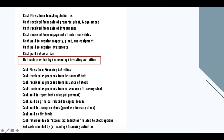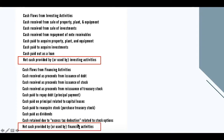For cash flows from financing activities, this would include cash received as proceeds from issuance of debt securities, cash received as proceeds from issuance of stocks, cash received as proceeds from reissuance of treasury stock, cash paid to repay debt principal, cash paid on principal related to capital leases, cash paid to reacquire stock or purchase treasury stock, cash paid as dividends to shareholders, and cash retained due to excess tax deduction related to stock options. We will tally all the amounts to get the net cash provided by or used by financing activities.